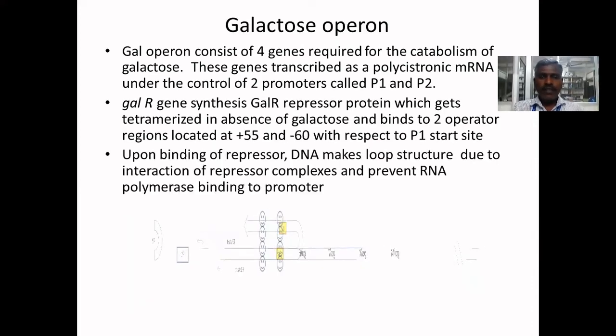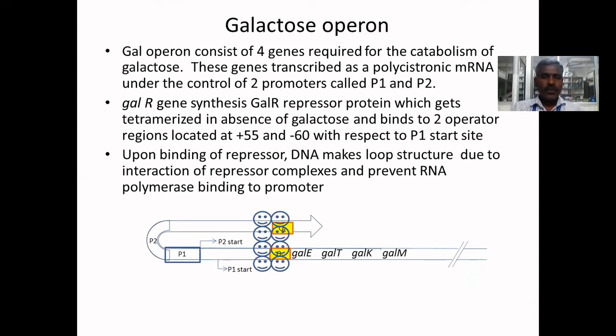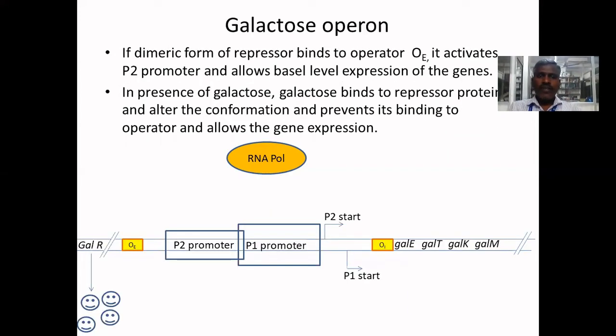Upon binding of repressor, DNA makes a loop structure due to interaction of repressor complexes and prevents RNA polymerase binding and hence no transcription. If dimeric form of repressor binds to operator external, it activates P2 promoter and allows basal-level expression of the genes.